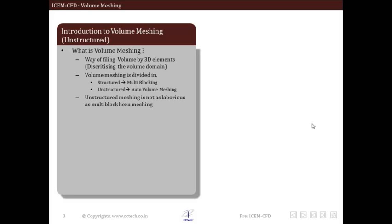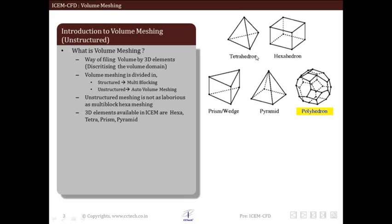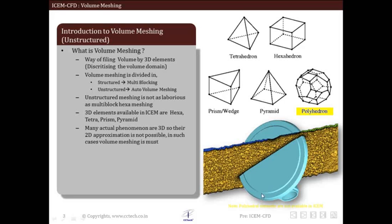The volume mesh consists of various small cells or elements with different shapes, each given different names. 3D elements are available in hexa, tetra, prism, or pyramid form. Different types of 3D elements are shown here: the tetrahedron, the hexahedron, the prism, the pyramid, and the polyhedron. In CFD analysis we commonly encounter 3D problems, which take much more effort to mesh than 2D problems. All these volumes are meshed using volume mesh.